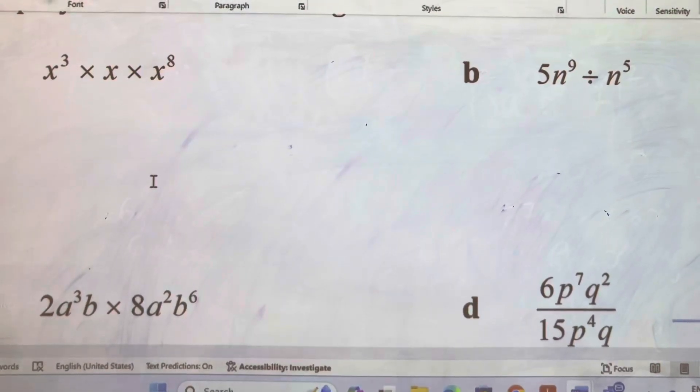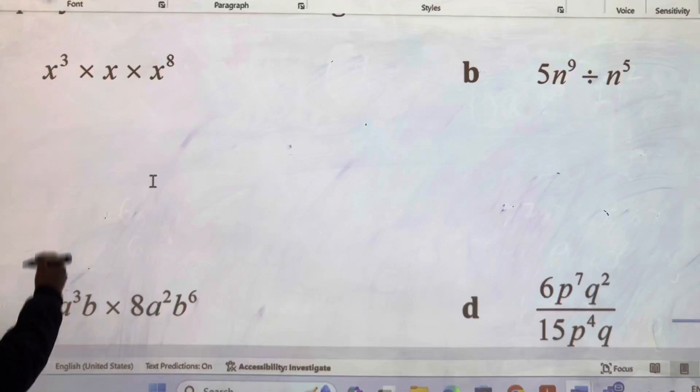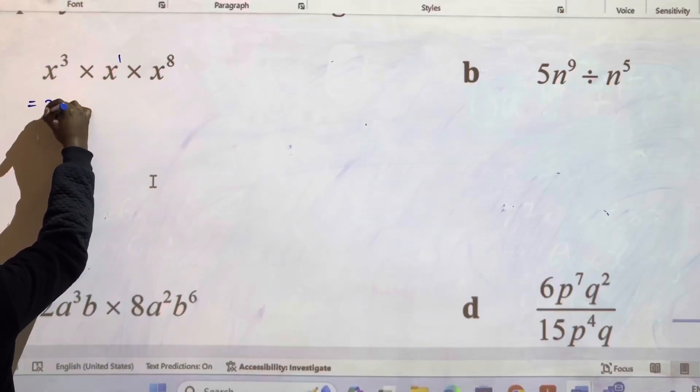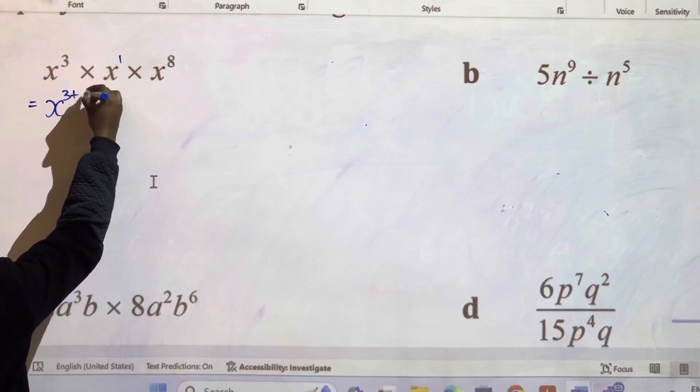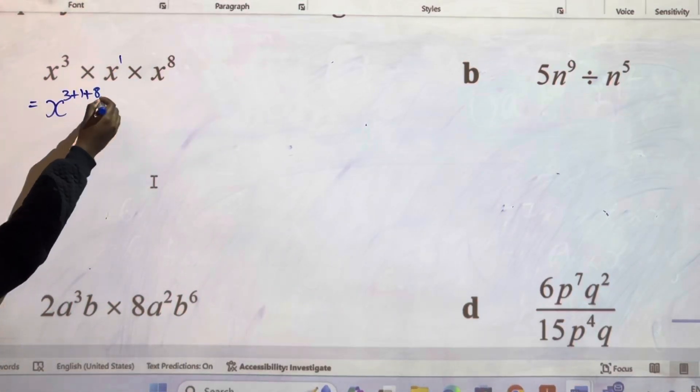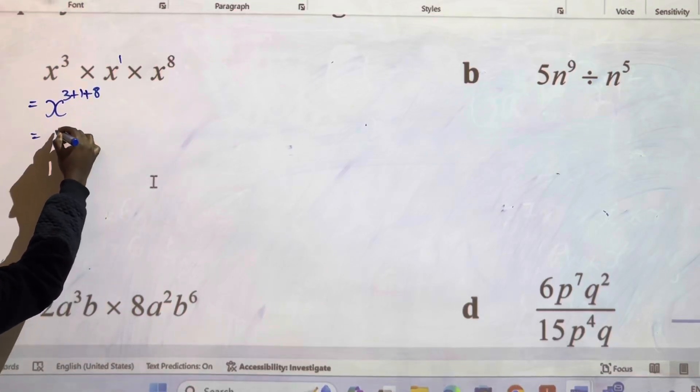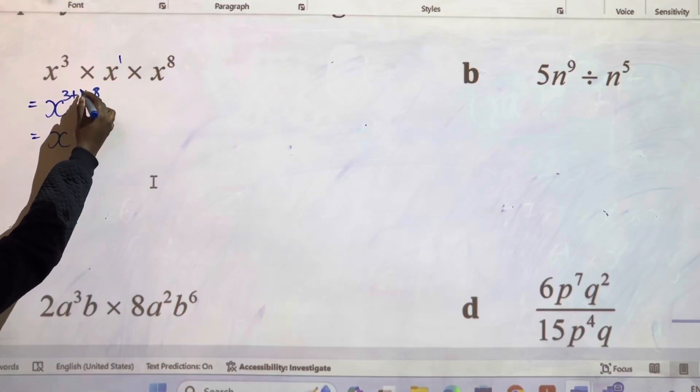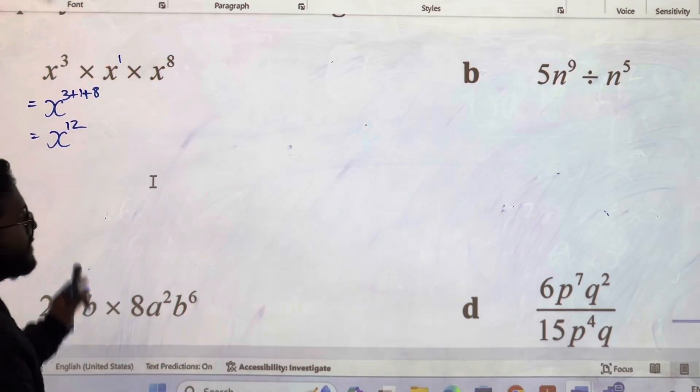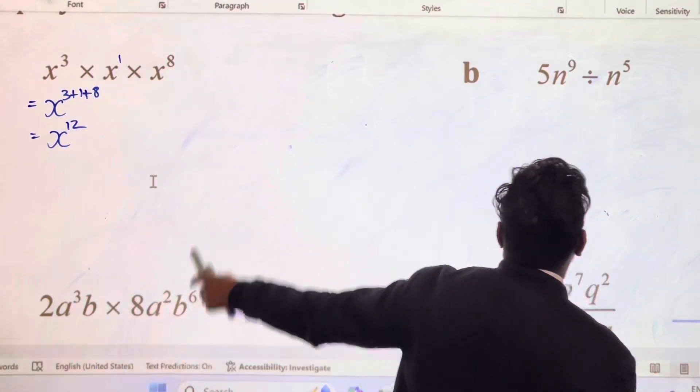Now we're going to go through these four questions, following the rules of indices. We're going to put a power of 1 there, so we have x to the power of 3 plus this 1 plus this 8. Why are we adding these? Because they have the same bases and we're adding the powers. So x to the power of 4, 3 plus 1 is 4, 4 plus 8 is 12. That's your answer, so that's worth one mark.